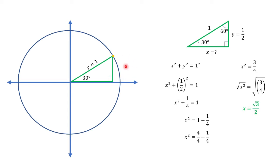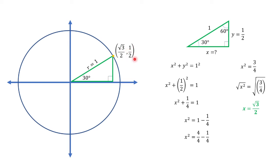In this case, we take the positive answer because the point is located in the first quadrant. Therefore, the coordinates of this point are (√3/2, 1/2).